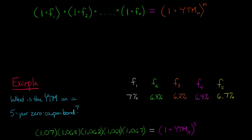So we're going to multiply 1.07 by the next term, 1 plus the forward rate for year 2. What's the forward rate for year 2? It's right here at 6.8%. So we're going to have 1.068. So we're just taking 1 plus the forward rate for each of these periods.